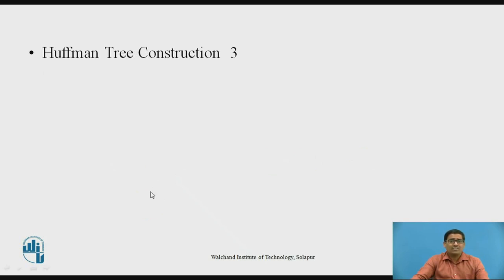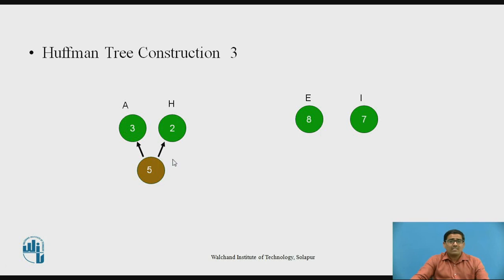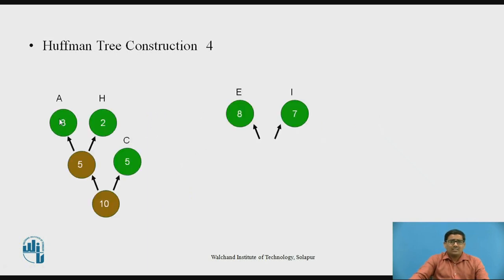In the next step, the remaining symbols are C, E, and I, with frequencies 5, 8, and 7 respectively. Since C has the lowest frequency, we combine C with the previous subtree (A+H, frequency 5). So 5 plus 5 becomes 10. Then, in another tree, we combine E and I, whose frequencies are 8 and 7, giving a combined frequency of 15.